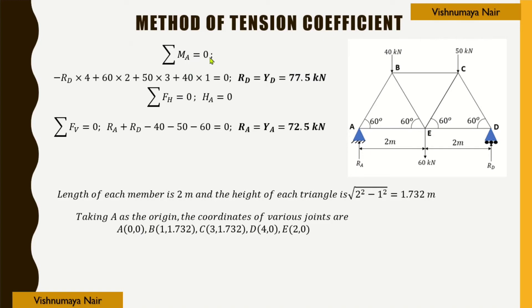Considering summation MA = 0: −RD·4 + 60·2 + 50·3 + 40·1 = 0. Therefore RD = YD = (60·2 + 50·3 + 40·1)/4 = 77.5 kN.